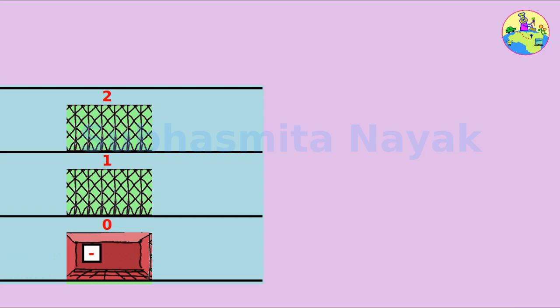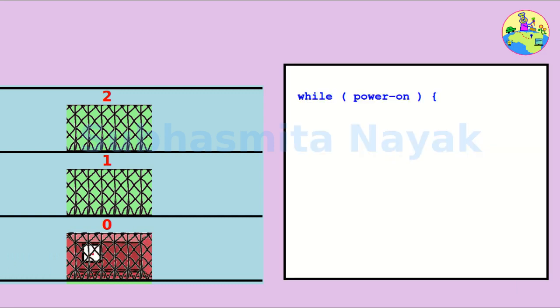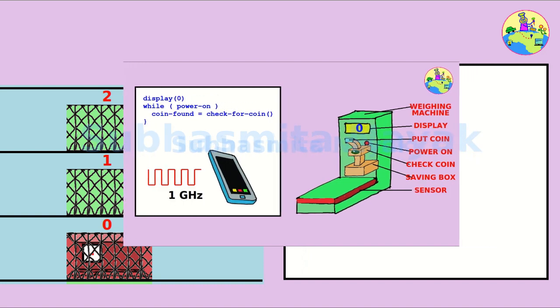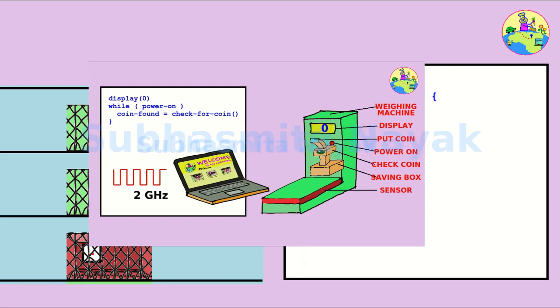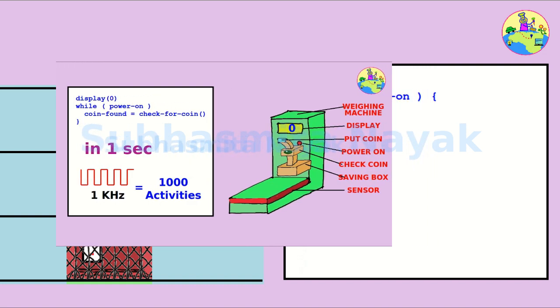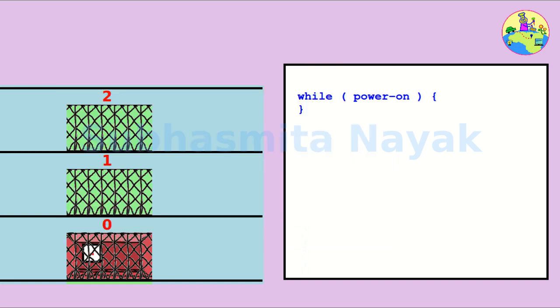This can be represented with a while loop. How frequently the lift checks for requests depends on the design frequency. Before we start coding, we have to assume a few things here.